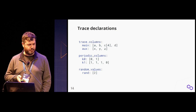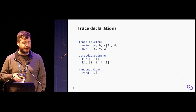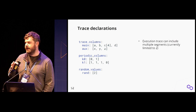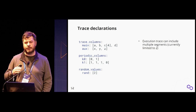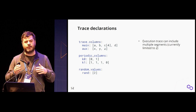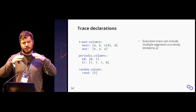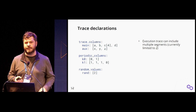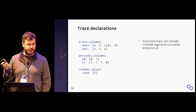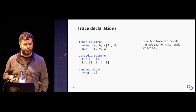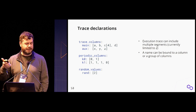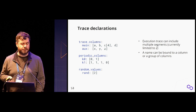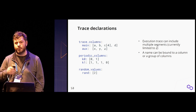In the trace declaration you specify the shape of the trace—the trace columns, periodic columns, and random values. Trace columns are divided into segments. You can have a main trace and an auxiliary trace: you build part of the trace, commit to it, send the commitment to the verifier, the verifier sends randomness, and then you build another segment. Within each trace segment you can bind columns to specific names—for example, column A, column B, and a group of four columns called C.